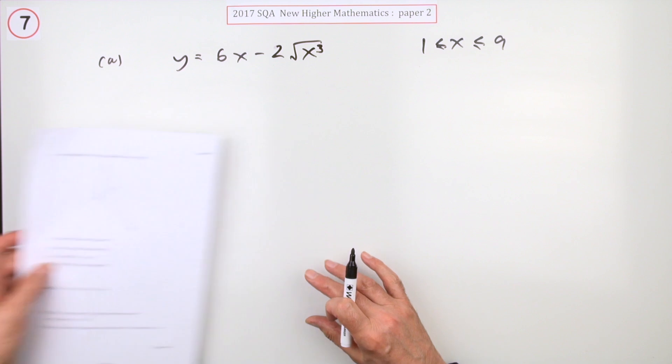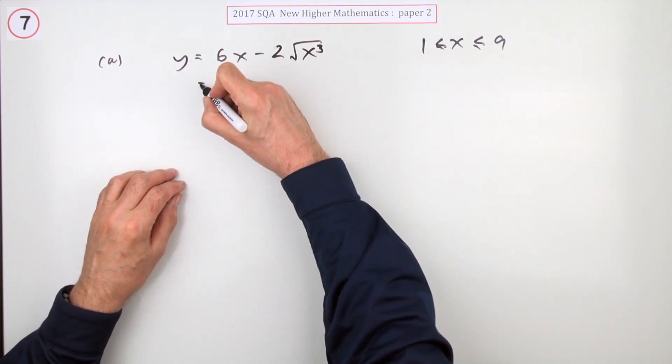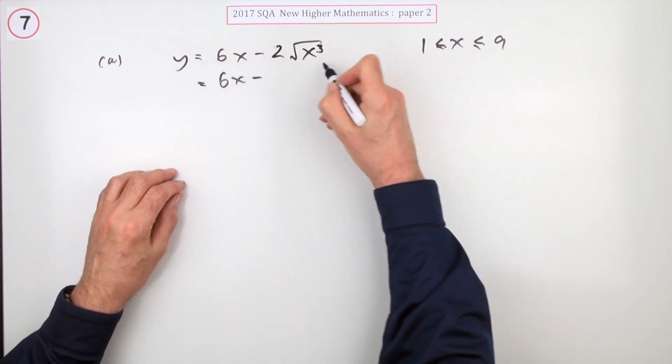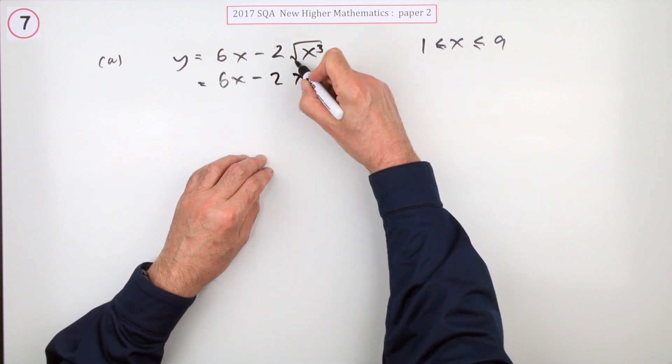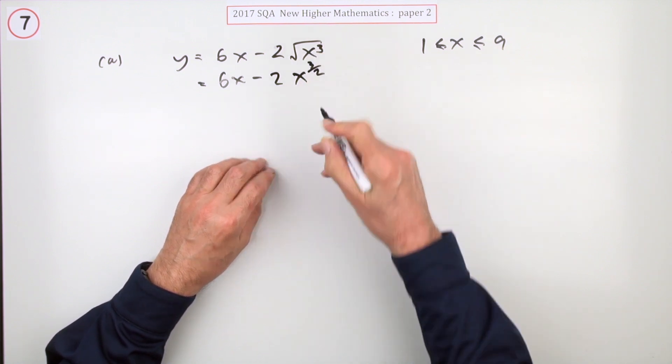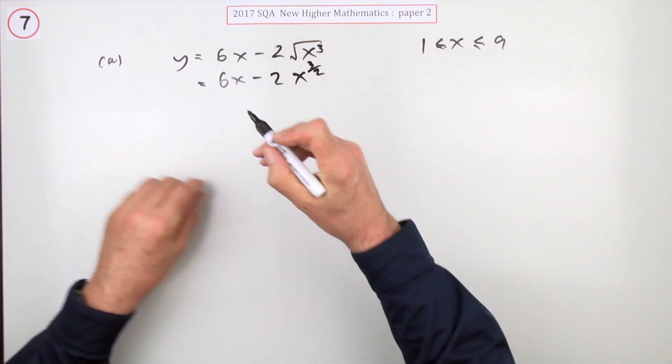So differentiate it, but before you differentiate it, put that into index form. So that's got a power three and a root two, so that's power three upon two. So it's probably a mark for that.